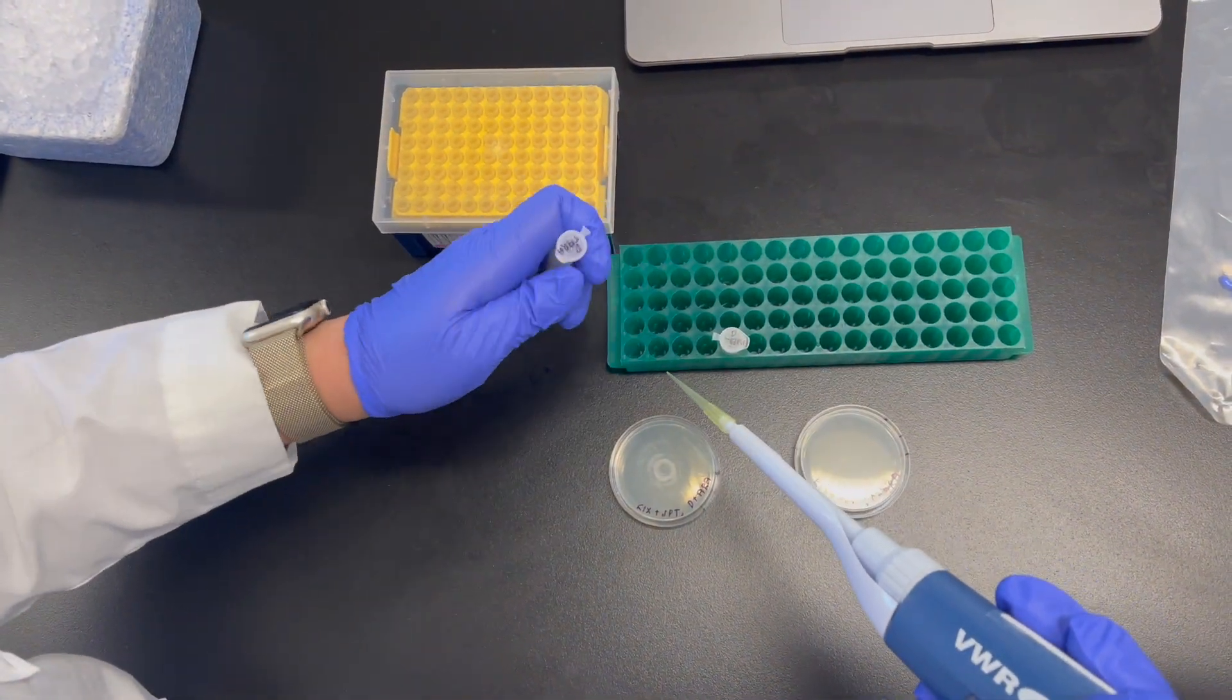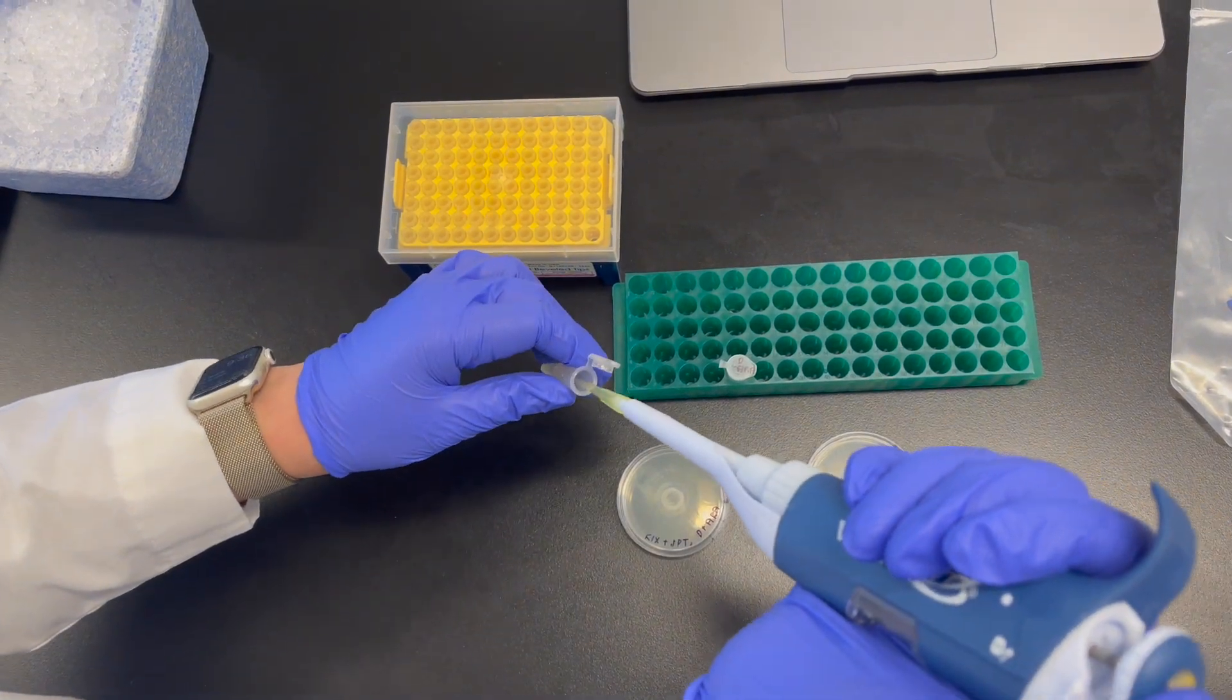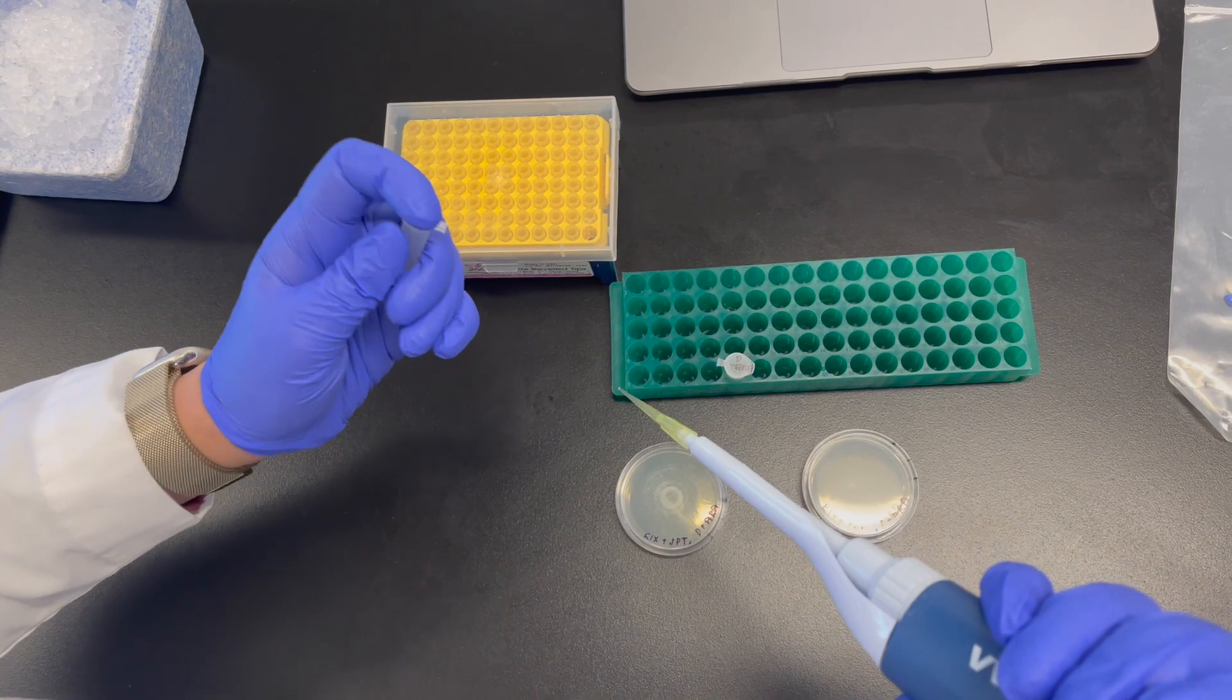Using the micropipette, take 100 microliters of the sample from the test tube and plate it onto the corresponding plate.